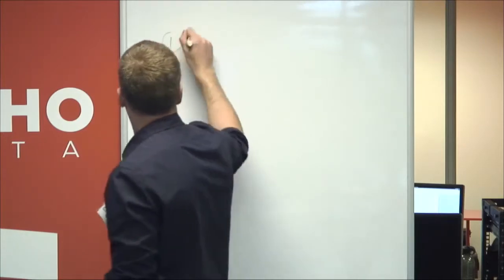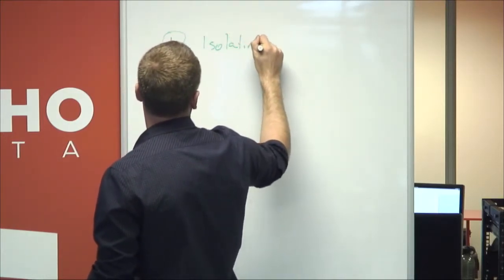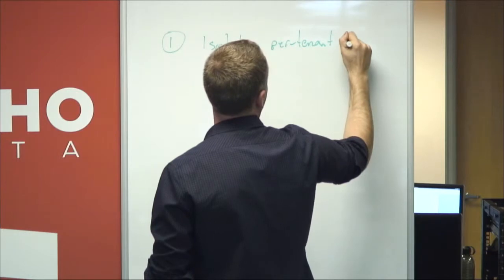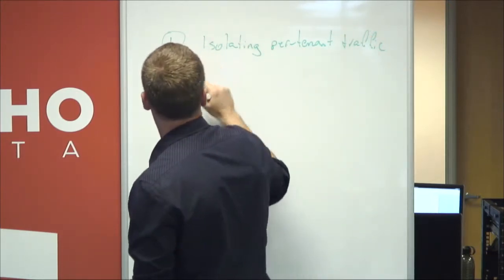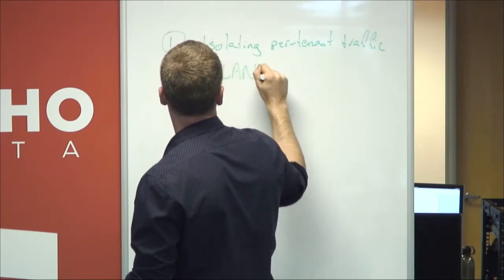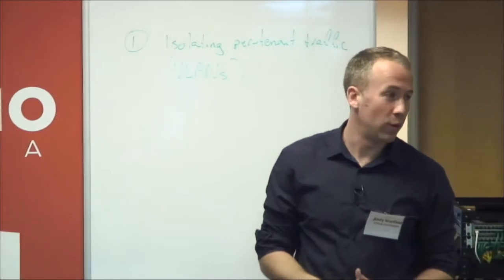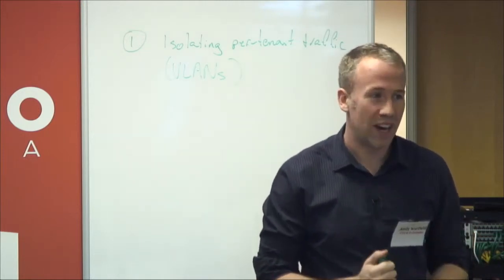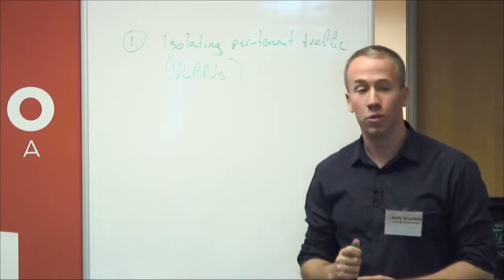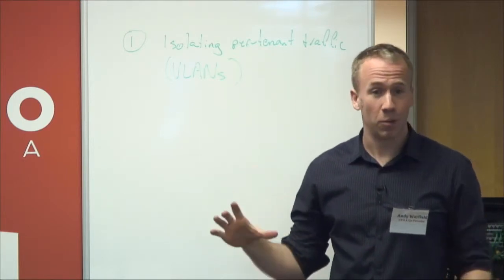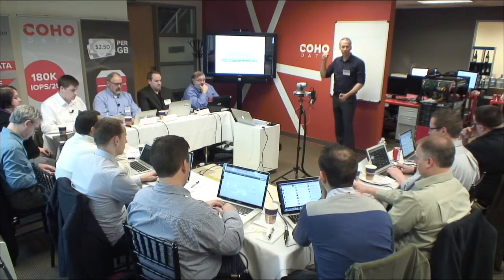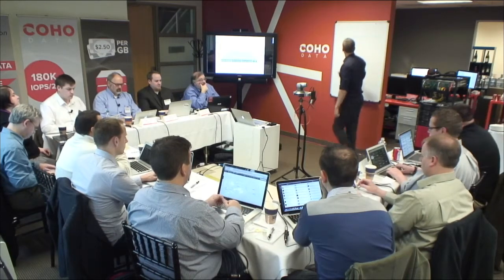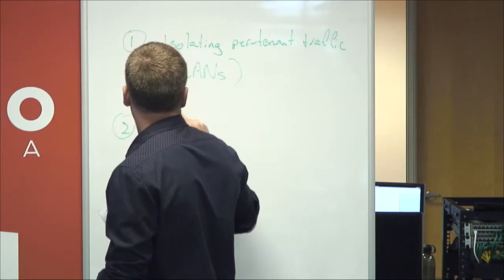Use case number one is isolating per tenant traffic. So this is effectively VLANs, except VLANs suck at scale. You only have 4,000 of them, and every switch configures them differently. And so they're a nightmare. At large enterprise environments where VLANs are actually used to carve up the network, they typically have a big piece of paper somewhere. Sometimes an Excel spreadsheet, if they're really good, that has the VLAN allocations. It's basically this hard assignment problem across all of their network.